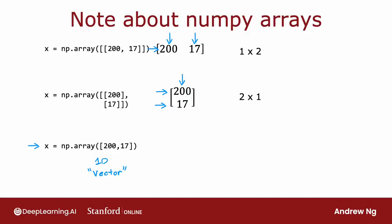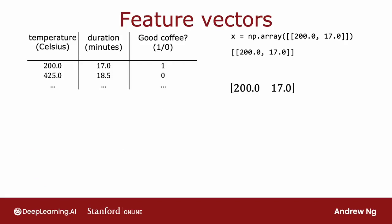In course one, when working with linear regression and logistic regression, we used 1D vectors to represent the input features x. With TensorFlow, the convention is to use matrices to represent the data. TensorFlow was designed to handle very large datasets, and by representing data in matrices instead of 1D arrays, it lets TensorFlow be more computationally efficient internally. So for the first training example in the coffee dataset — 200 degrees Celsius and 17 minutes — we represent it as a one by two matrix with one row and two columns storing the numbers 200 and 17.